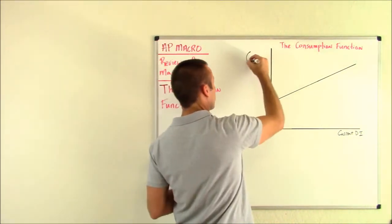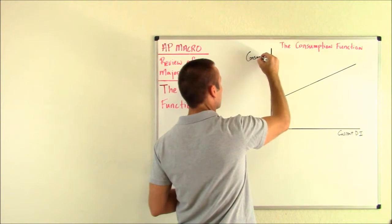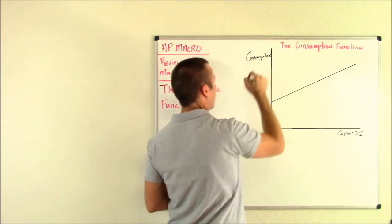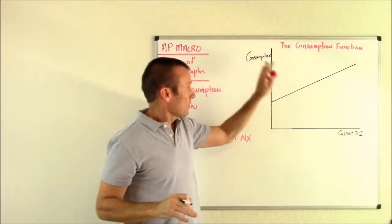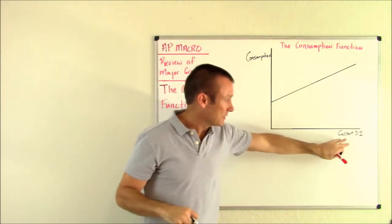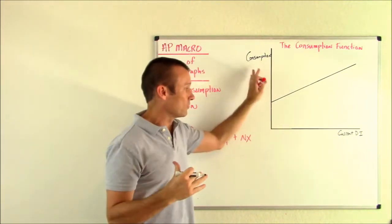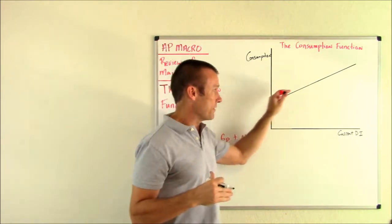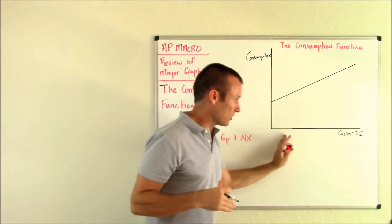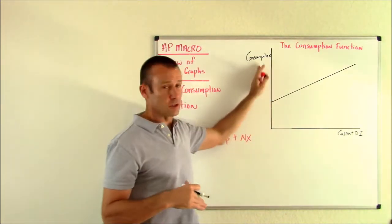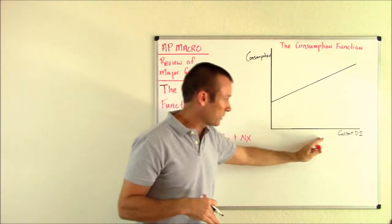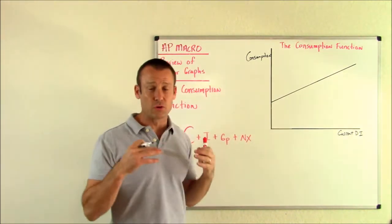Dependent variable goes right here. That's consumption, household spending. So what we're saying is consumption, household spending, is dependent on current disposable income. What is the relationship between the two? Very much a positive relationship. Current disposable income increases, consumption is going to increase. Current disposable income decreases, consumption is going to decrease.